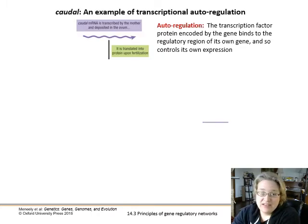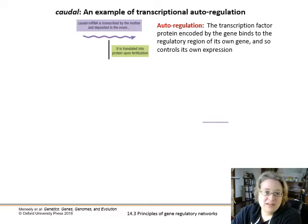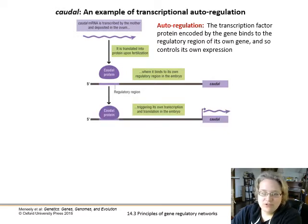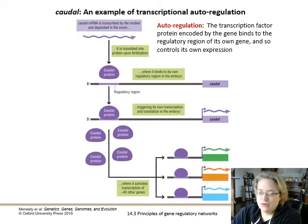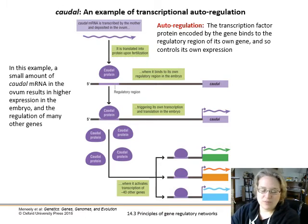In opposition to the never-ending cascade, we have autoregulation, where the transcription factor protein encoded by a gene binds to the regulatory region of its own gene, controlling its own expression. Caudal is a good example: the mRNA is transcribed by the mother and deposited into the egg cell, then translated into protein upon fertilization. That protein binds to its own regulatory region in the embryo, triggering its own transcription and translation, which then activates transcription of 40 other genes required post-fertilization. A very small amount of caudal mRNA results in higher expression in the embryo, starting a cascade of many other genes.